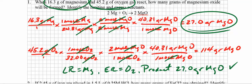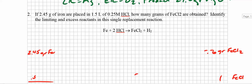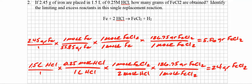Let's take a look at the second problem. Number two says: if 2.45 grams of iron are placed in 1.5 liters of a 0.25 molar hydrochloric acid solution, how many grams of FeCl2 — that's iron 2 chloride — are obtained? We want to identify the limiting and excess reactants in this single replacement reaction. We've got iron plus hydrochloric acid yielding iron 2 chloride and hydrogen gas — a 1 to 2 to 1 to 1 mole-to-mole relationship.